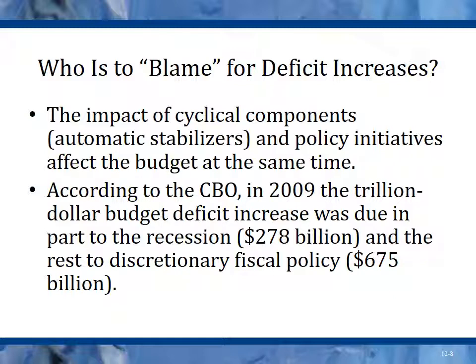That's worthy of a pause because we tripled our largest deficit in our history in one year. About a third — actually a little less than a third — was due to the recession. The rest, about $675 billion, roughly double the previous largest deficit ever, was just an increase in discretionary fiscal policy. Our government decided to spend a tremendous amount of money to try to fend off a deeper depression or recession.